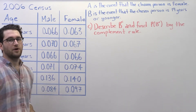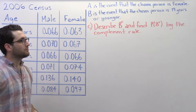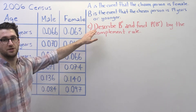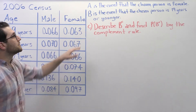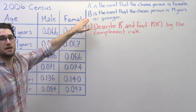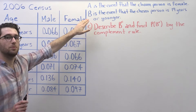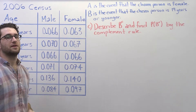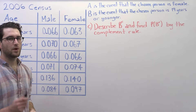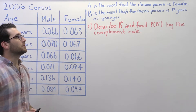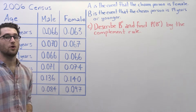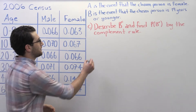Part C: describe B complement and find the probability of B complement by the complement rule. B is the event that the chosen person is 19 years or younger. That means B complement is the event that the chosen person is not 19 years or younger. A better way of saying that is that B complement is the event that the chosen person is 20 years or older.